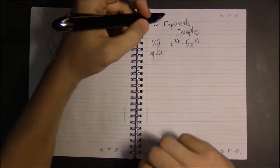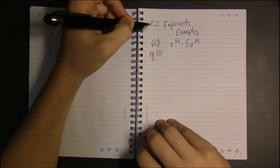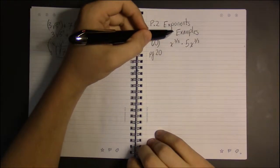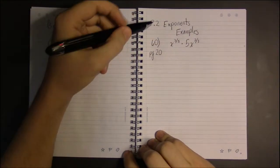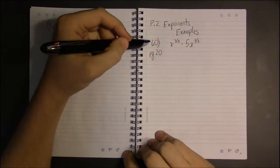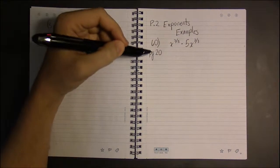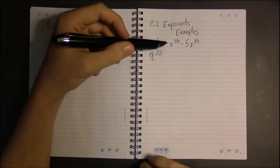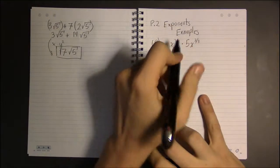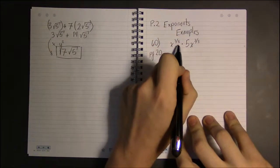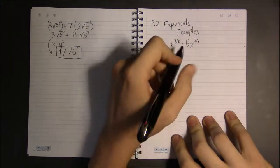To finish up section p2 on exponents, we're going to look at some examples from the homework. Looking at number 60 on page 20 of the textbook, we're presented with the problem to simplify x to the 3/5 times 5x to the 2/3.